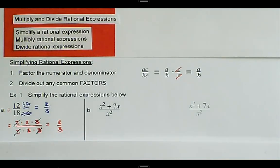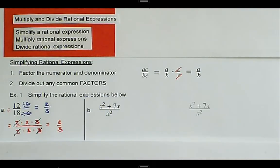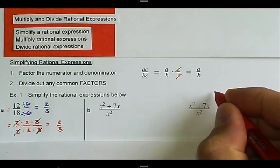So in step 2, this is talking about common factors, and a lot of mistakes that we make is we divide out common terms. You cannot cancel common terms.